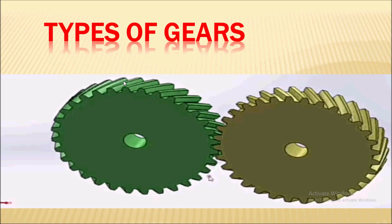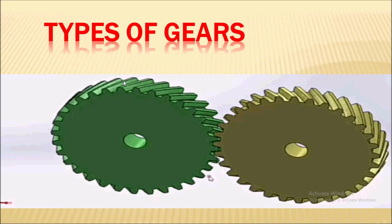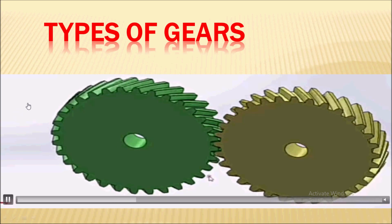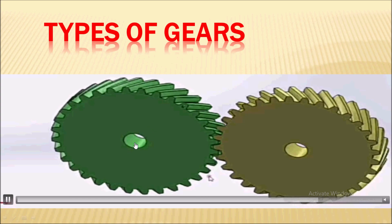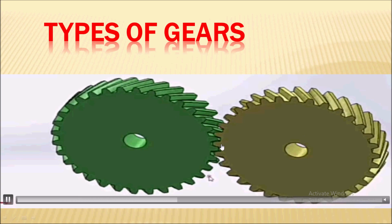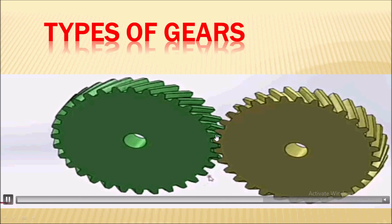Hello everyone. In this video I will talk about gears and their types. First of all, what is a gear? A gear is a mechanical element that is used to transfer power from one shaft to another shaft by successive engagement of teeth.